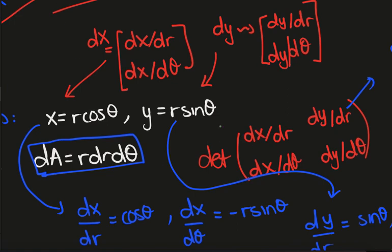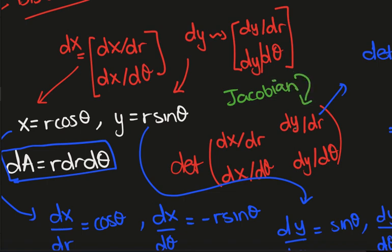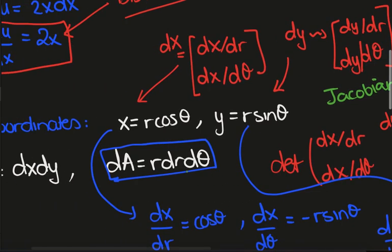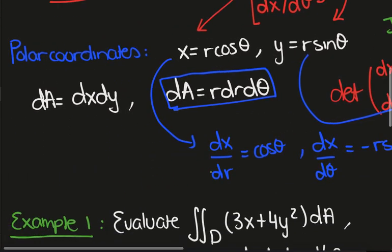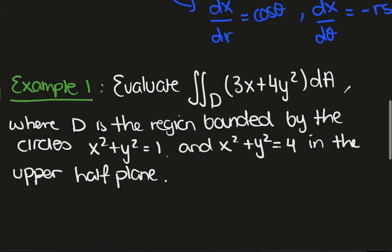The technical word for this matrix is the Jacobian. That's what this matrix is called. Let's apply that to a particular example.